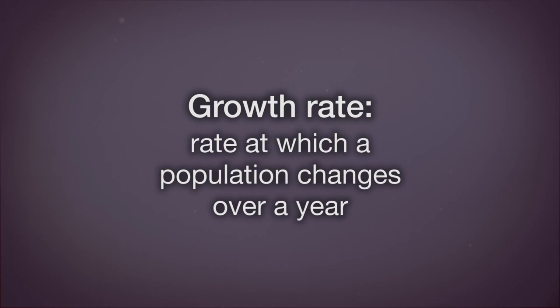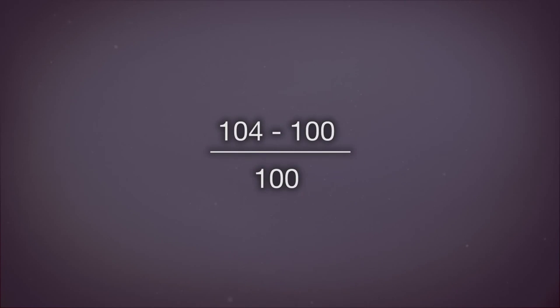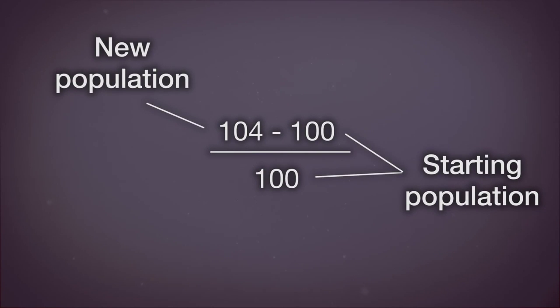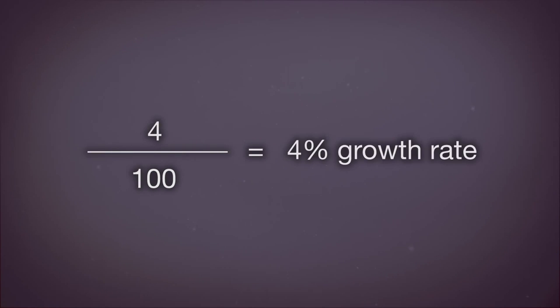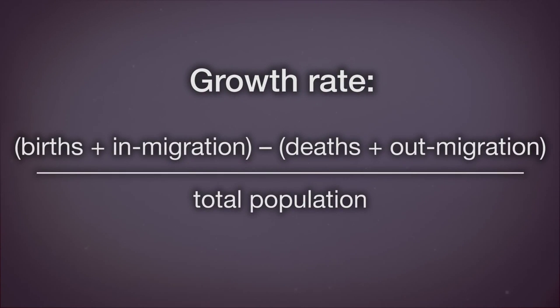The growth rate is the rate at which the population changes each year. It is typically presented as a percent of the population. A population that has 100 people in one year and grows to 104 people the next year has a growth rate of 104 minus 100 divided by the starting population of 100 — that's 4 over 100, equals a 4% growth rate. Growth rate can be shown as births plus in-migration minus deaths plus out-migration, divided by the total population.